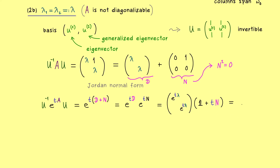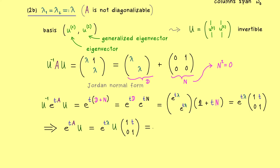Multiplying the matrices together and pulling out e to the power t-lambda, what remains in the matrix is the diagonal part with 1's and off-diagonal a t. We then put U-inverse to the right-hand side, multiplying matrix U with this new matrix. The first column is simply eigenvector u1, and the second column is t times u1 plus the generalized eigenvector u2. These two columns, multiplied by e to the power t-lambda, span the whole two-dimensional solution space.